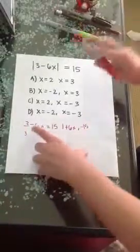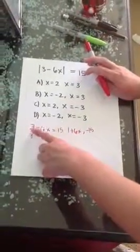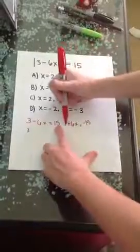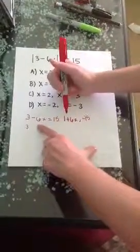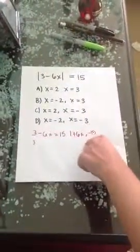First, we're going to set it up like a typical algebraic equation, which is 3 minus 6x equals 15. We're going to add our line right here, which means we're going to add 6x, and we're going to subtract 15.